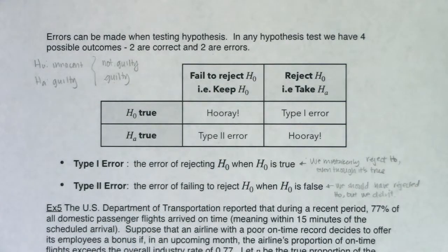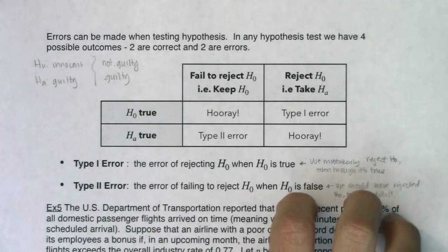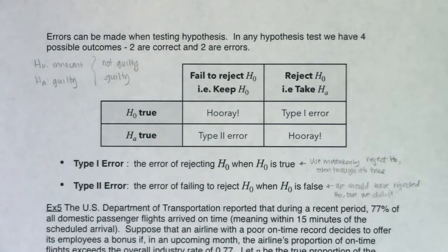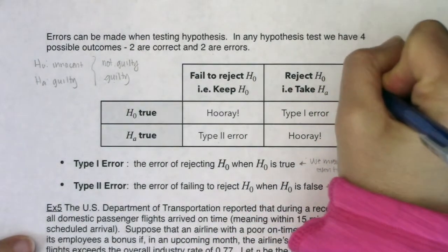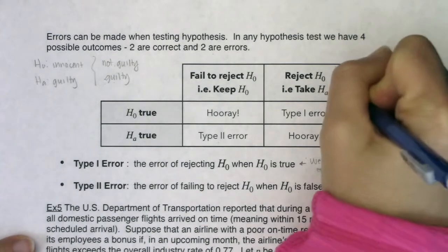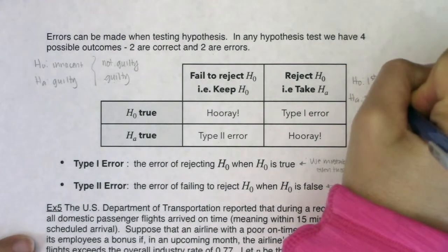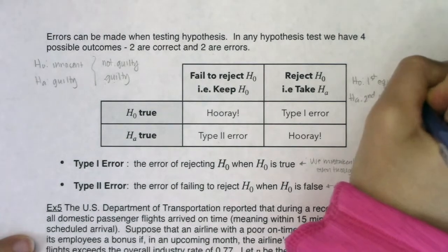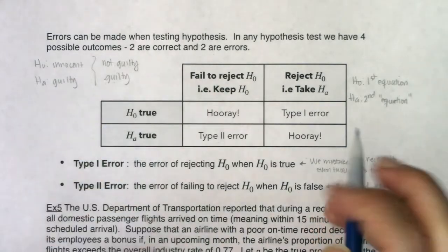These can be a lot to take in, especially with the funky wording. Here's something that helped me in college — if it helps you, great; if not, don't use it. When trying to remember which error is which, I called H naught the 'first equation' and H_A the 'second equation' — I'll put equation in quotes and explain why in a moment.